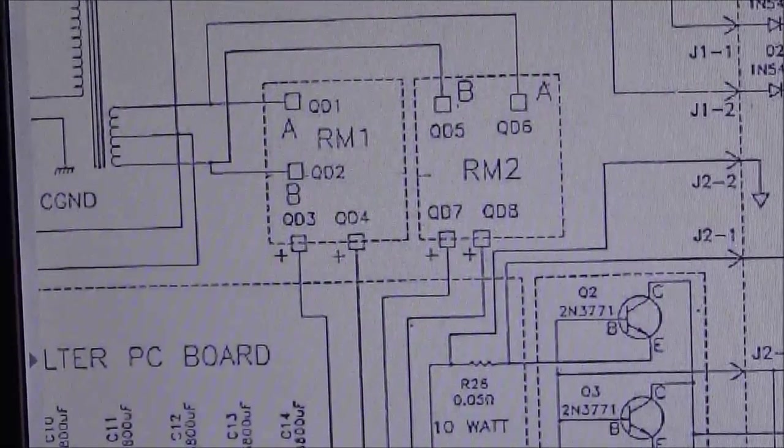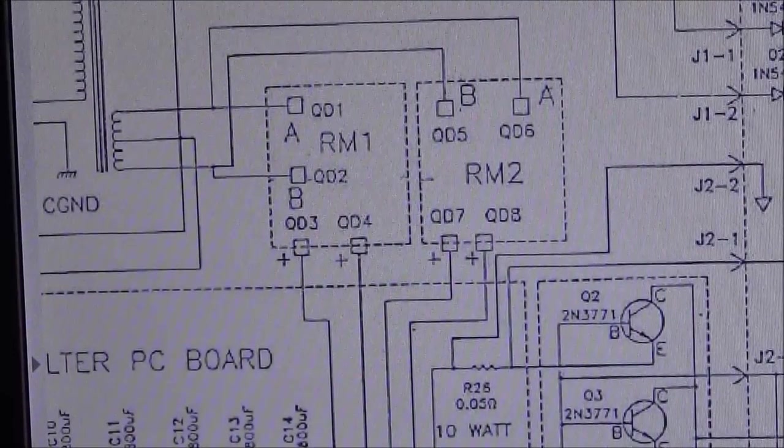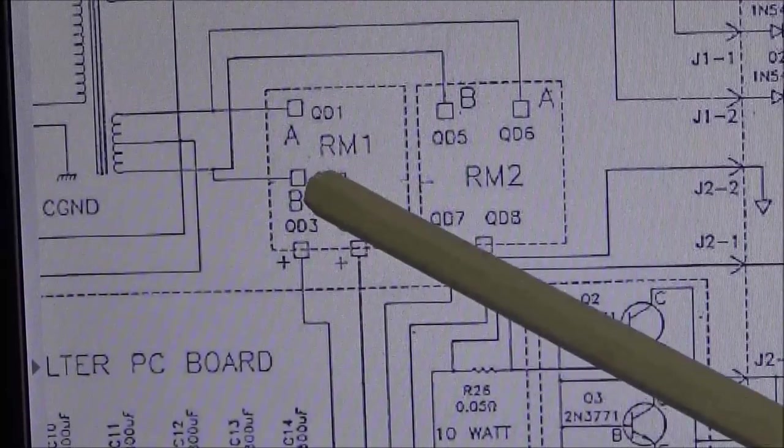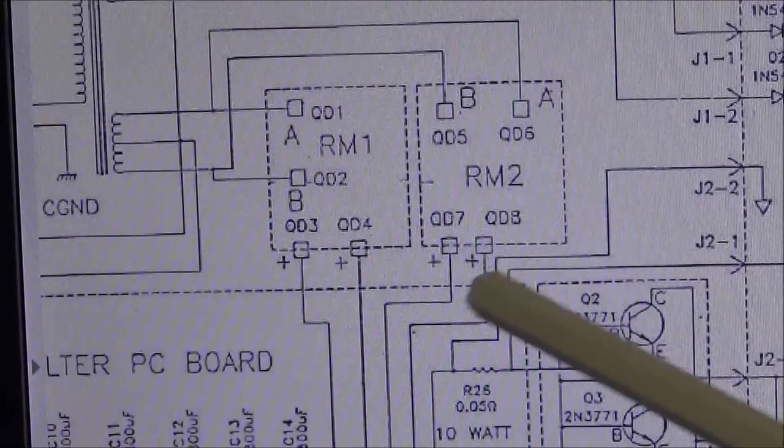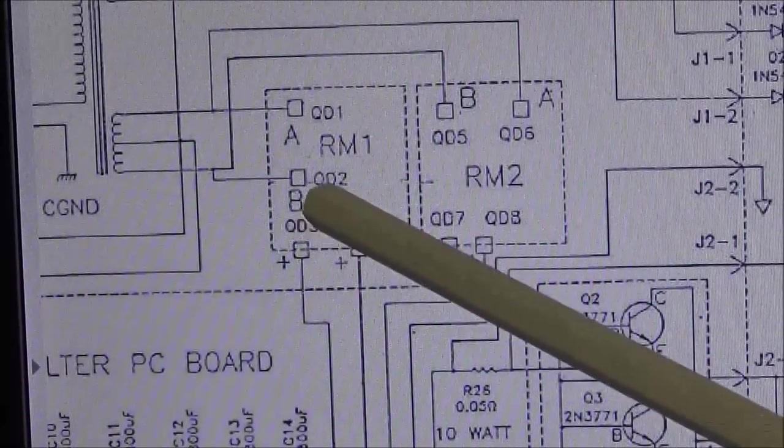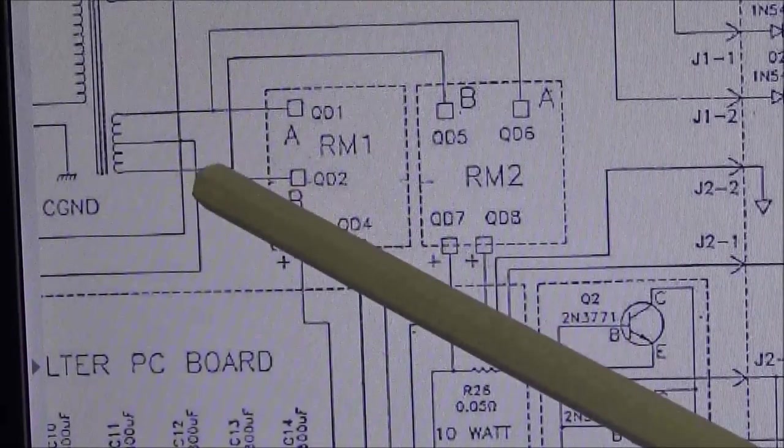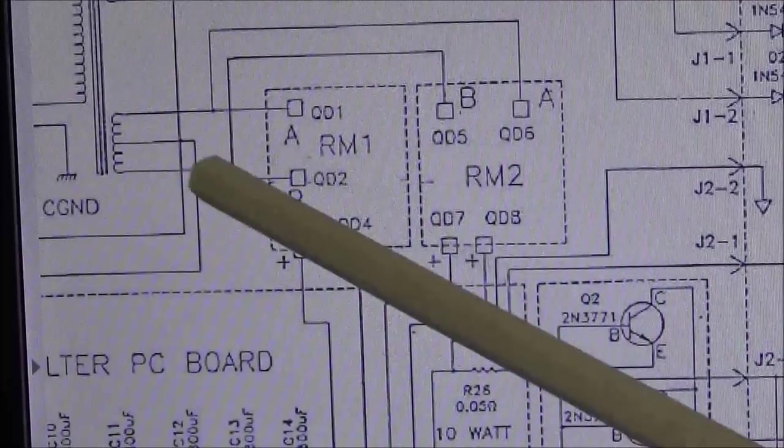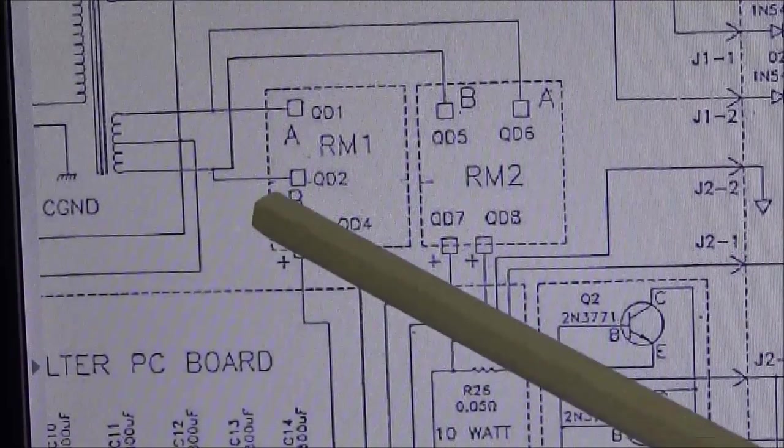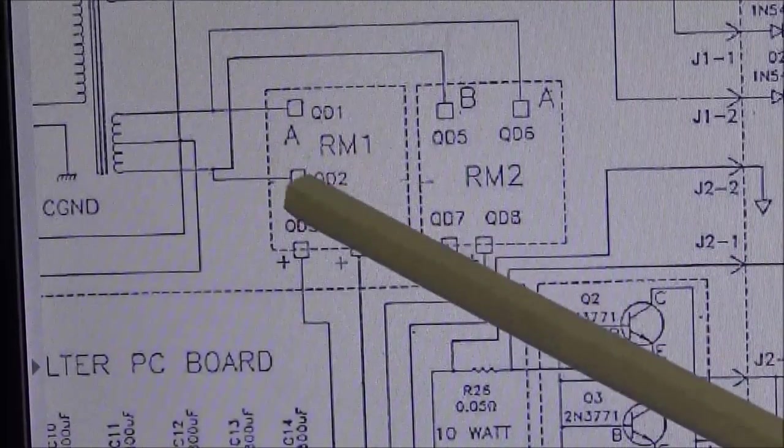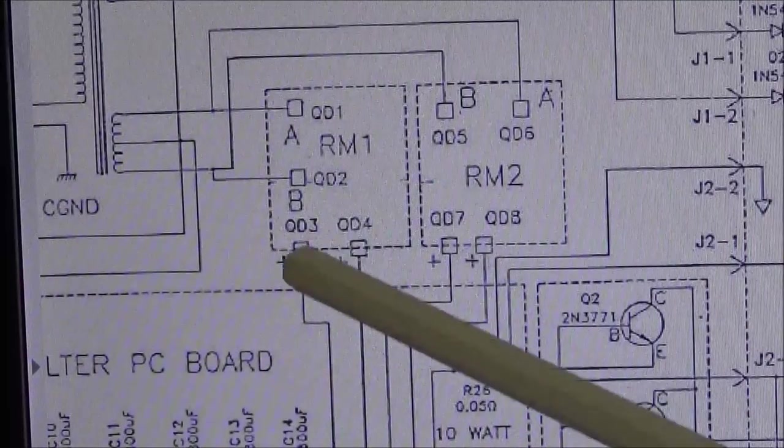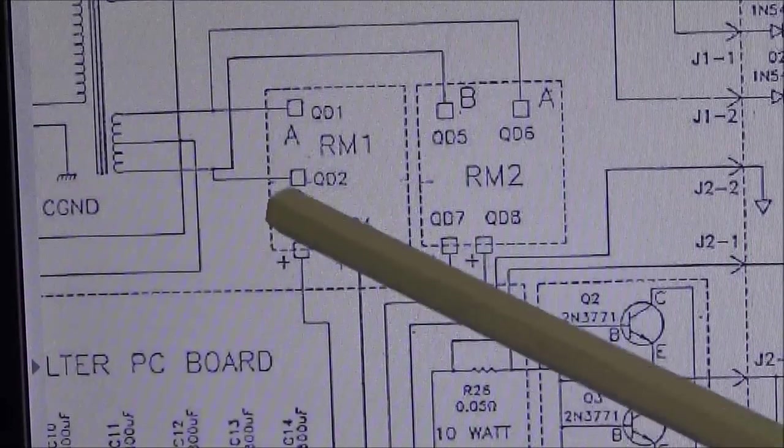And as someone else mentioned in the comments on the other video, RM1, RM2 - rectifier module 1, rectifier module 2. The two AC inputs come in, they go into A and B from each side, and positive on the other side.